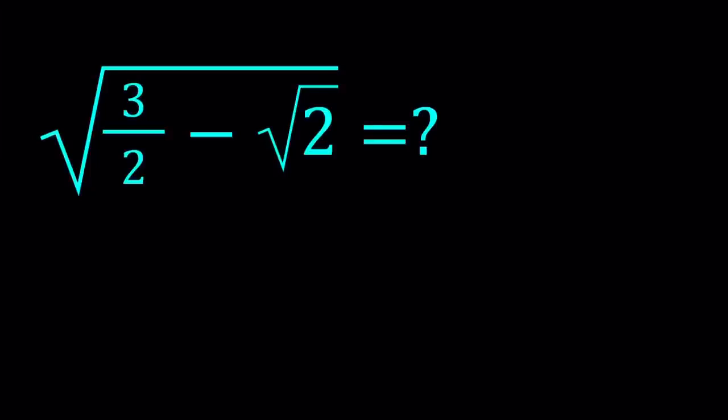Hello everyone. In this video, we're going to be simplifying a radical expression. We have the square root of 3 over 2 minus square root of 2, and we're going to write this in a simpler way. I'll be presenting three methods. Let's start with the first one.